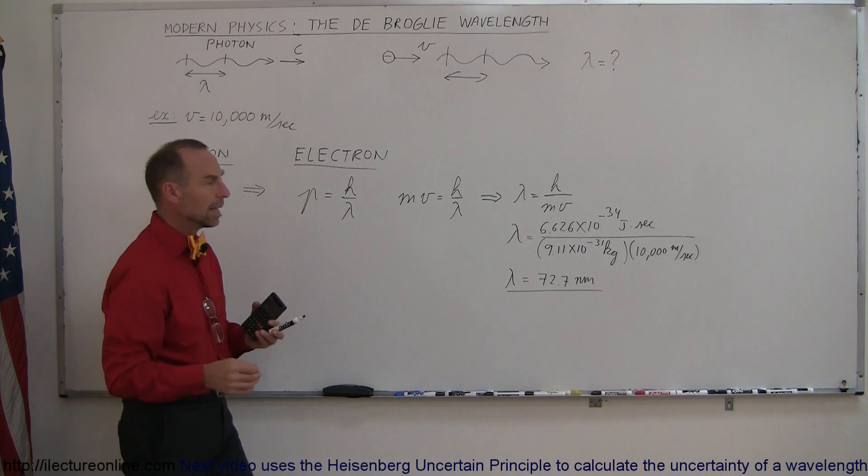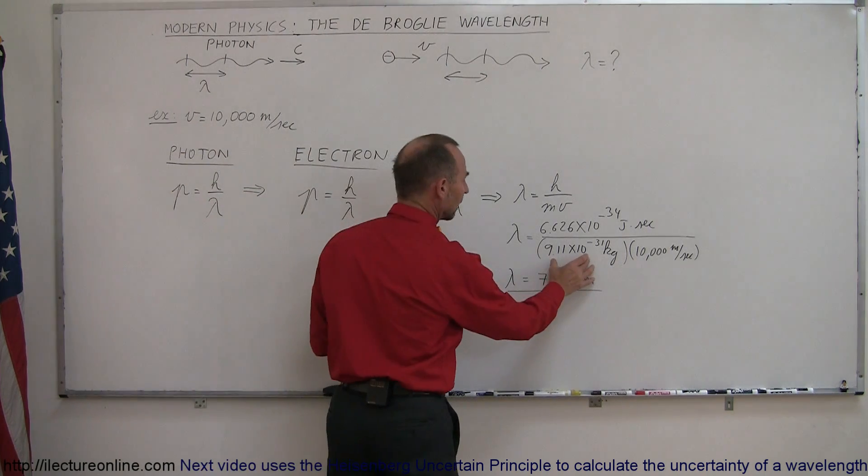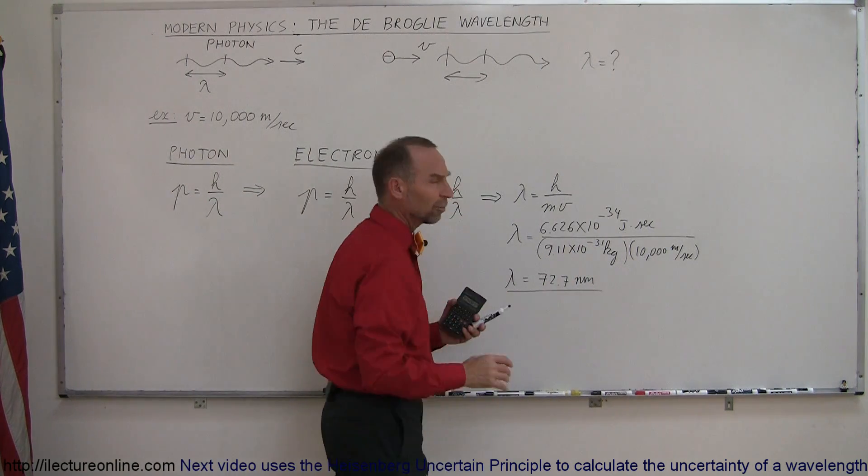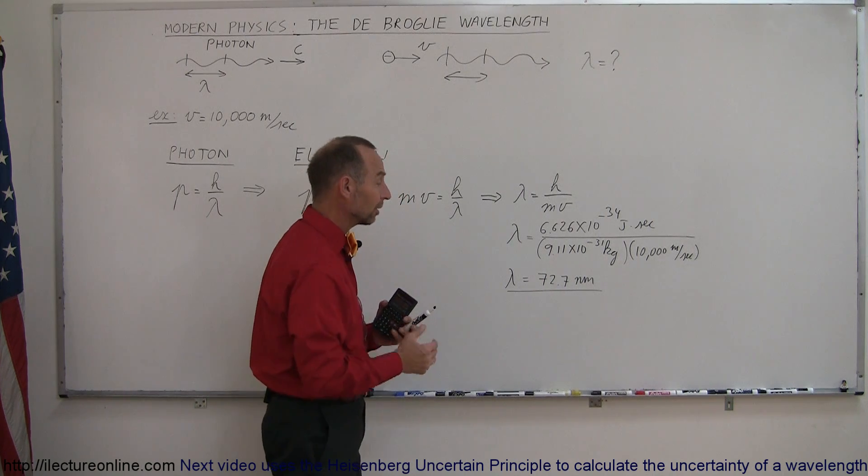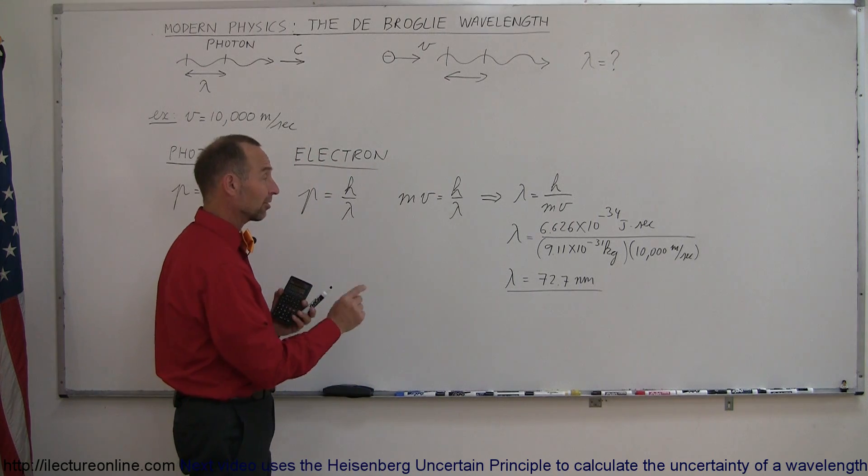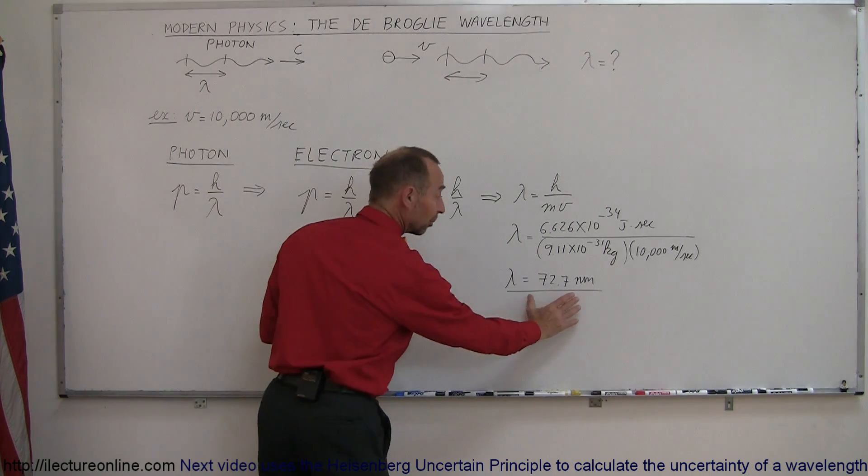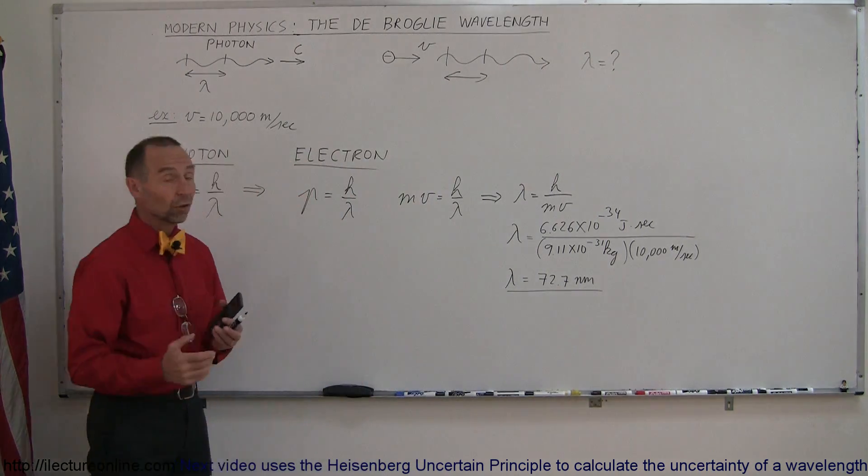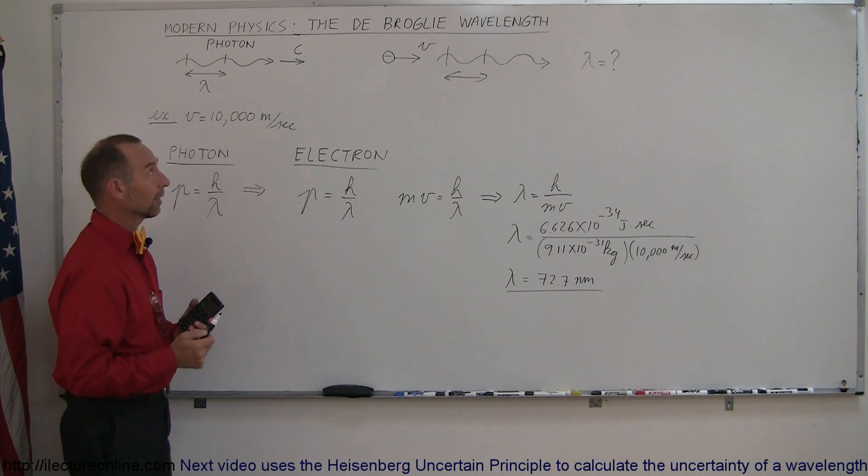Now, of course, if this had been a proton, and we put a proton in there, of course the mass of a proton is about 2,000 times the mass of an electron, that means the wavelength would have been a lot smaller, a lot more difficult to see. But for very small particles like electrons, there is a sizable wavelength associated with the motion of that particle.